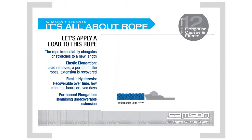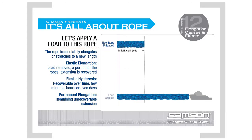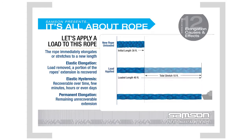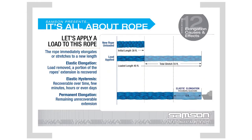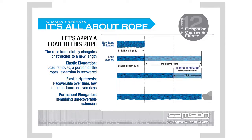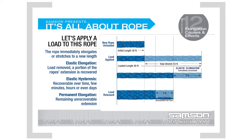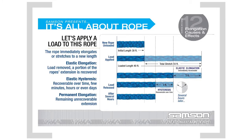Here's what happens when a rope is loaded — a good illustration of the components of elongation. First, the rope immediately elongates or stretches to a new length. When the load is removed, a portion of the rope's extension is immediately recovered; this is called elastic elongation. The next component is hysteresis — the portion of the extension that is recoverable over time. In the course of a few minutes, hours, or even days, the rope will recover some of the remaining extension. What remains after that is called permanent elongation.